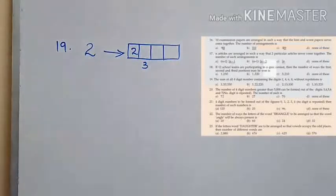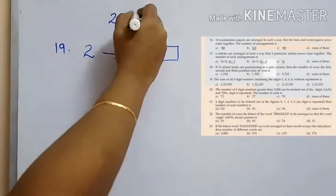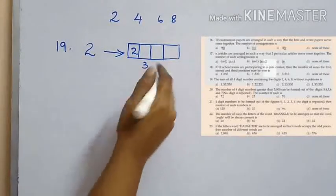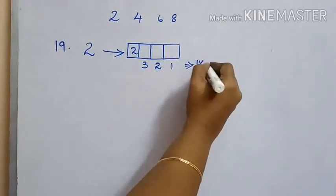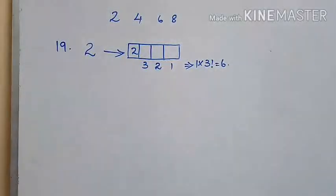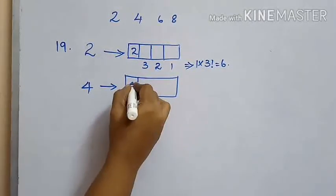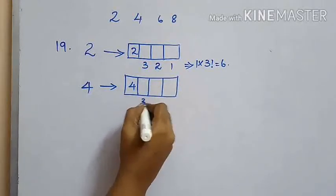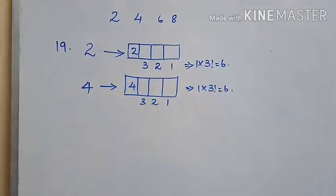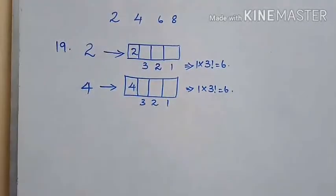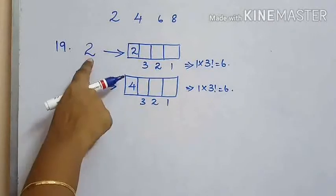Consider all four-digit numbers starting with 2: the rest of the 3 boxes can be occupied by either 4, 6, or 8 in 3 factorial ways, giving 6 arrangements. Similarly, four-digit numbers starting with 4 can also be arranged in 6 ways. In the same manner, digits 6 and 8 will also have 6 numbers each.